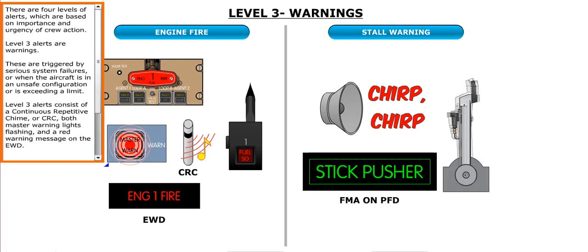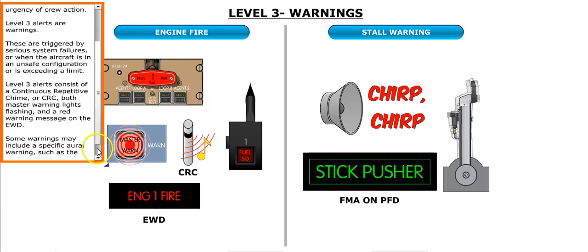There are four levels of alerts, which are based on importance and urgency of crew action. Level 3 alerts are warnings. These are triggered by serious system failures or when the aircraft is in an unsafe configuration or is exceeding a limit. Level 3 alerts consist of a continuous repetitive chime, or CRC, both master warning lights flashing, and a red warning message on the EWD. Some warnings may include a specific oral warning, such as the stall warning.